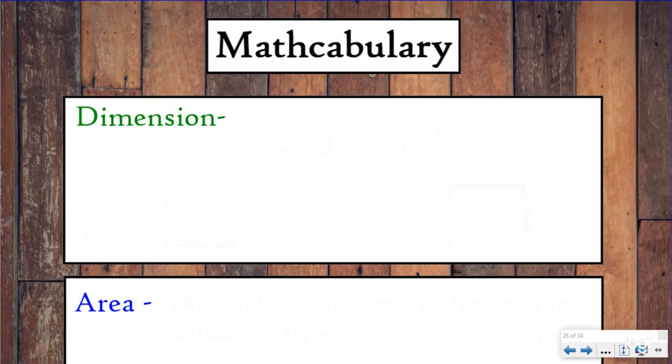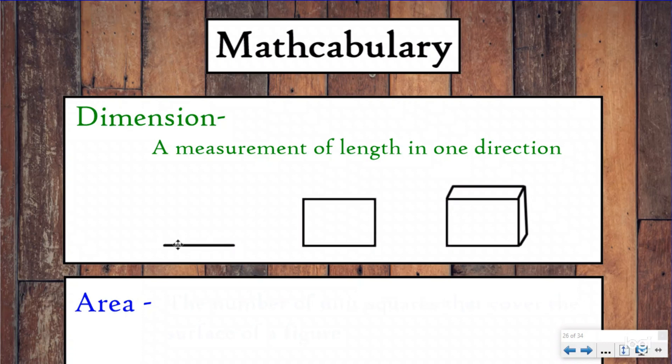But first let's go over some mathcabular just so we're all on the same page. You don't need to write these down today because you already wrote them down in the previous lesson. I just want to quickly review them. So a dimension, a dimension is a measurement of length in one direction. So we talked about how a line can only be measured in one direction, so it has one dimension.